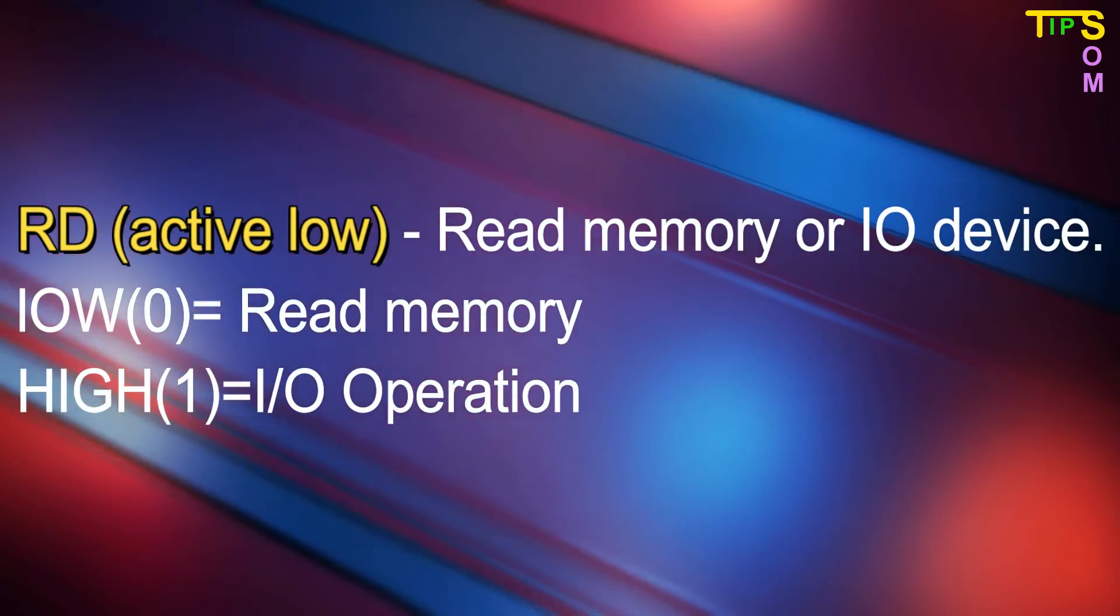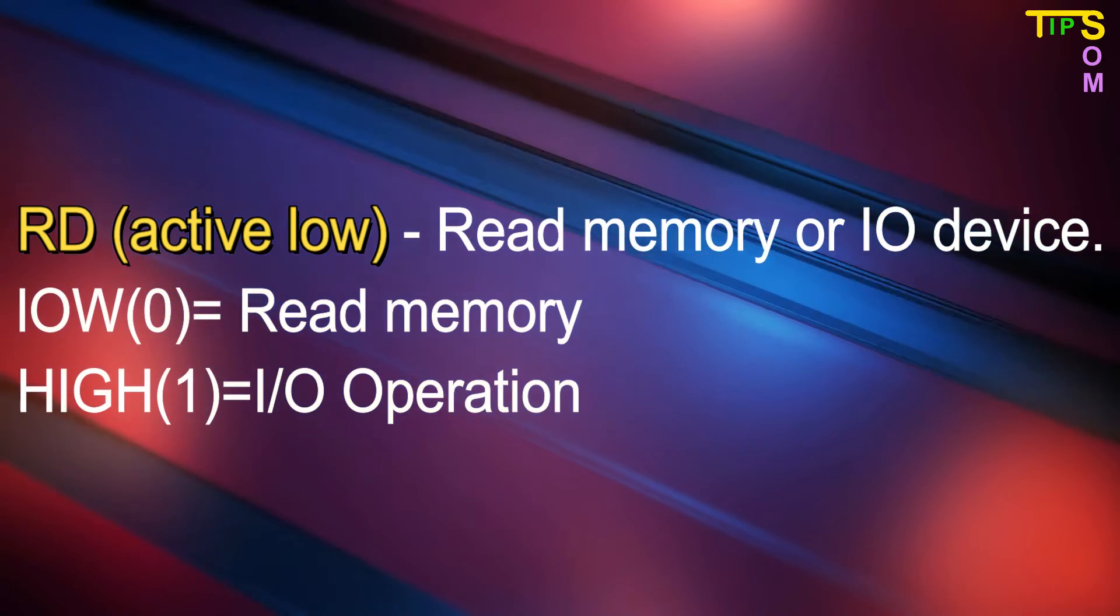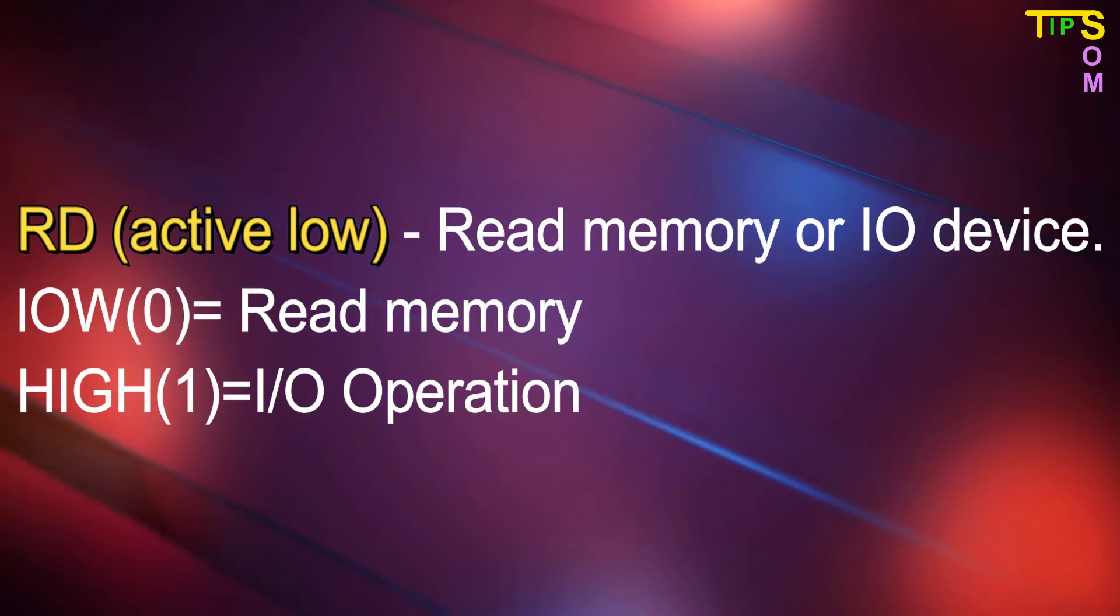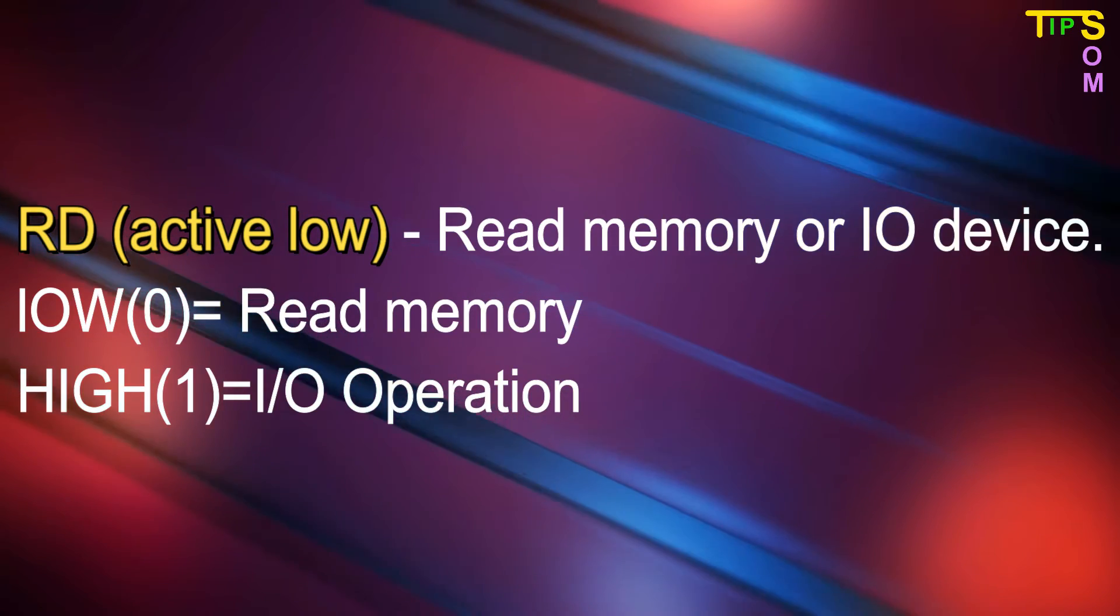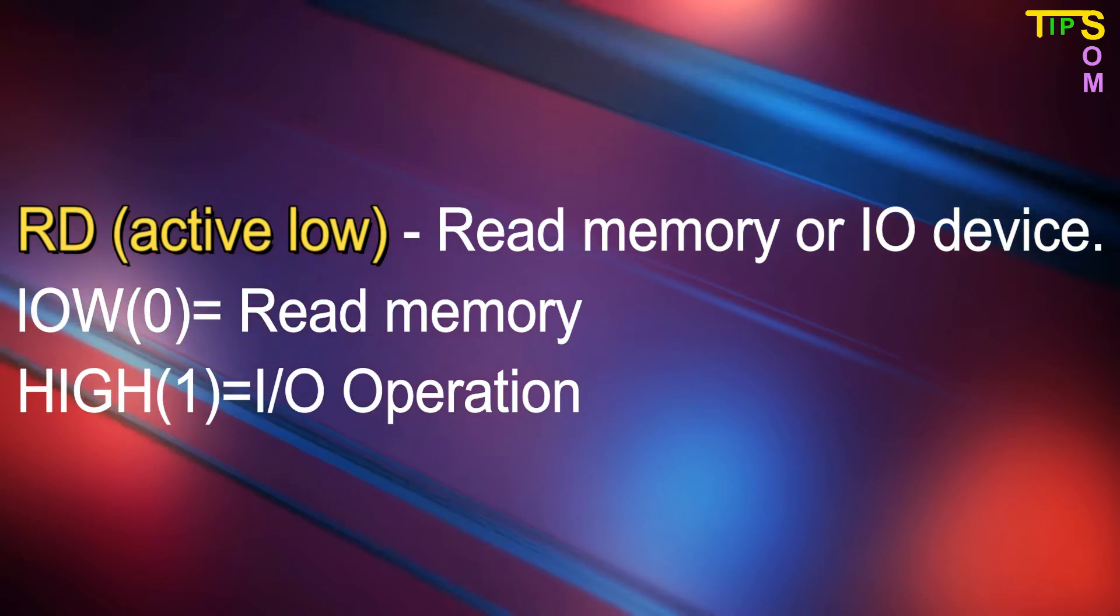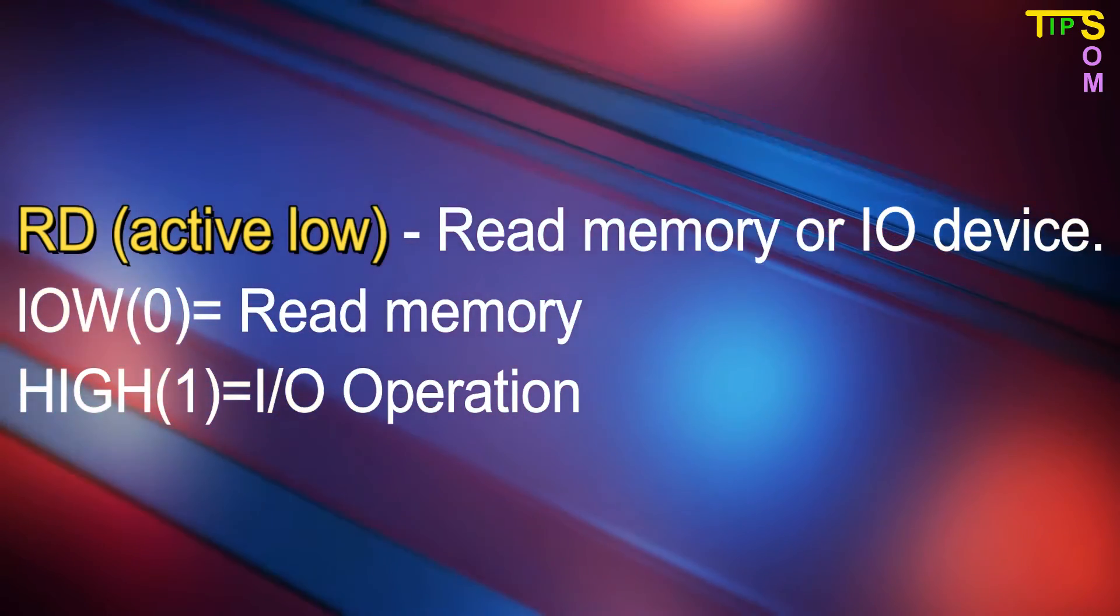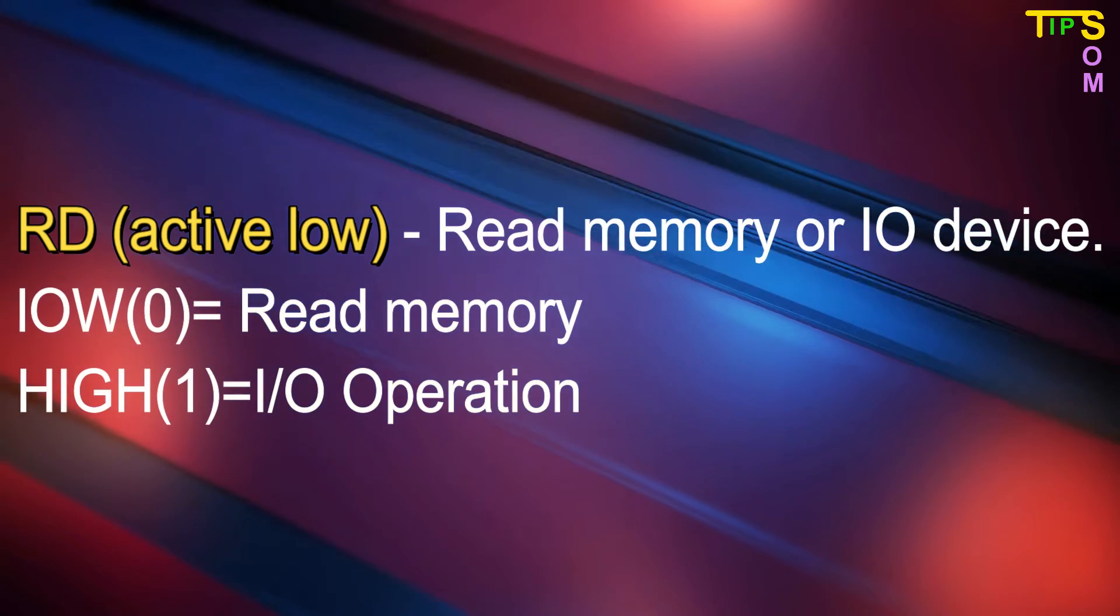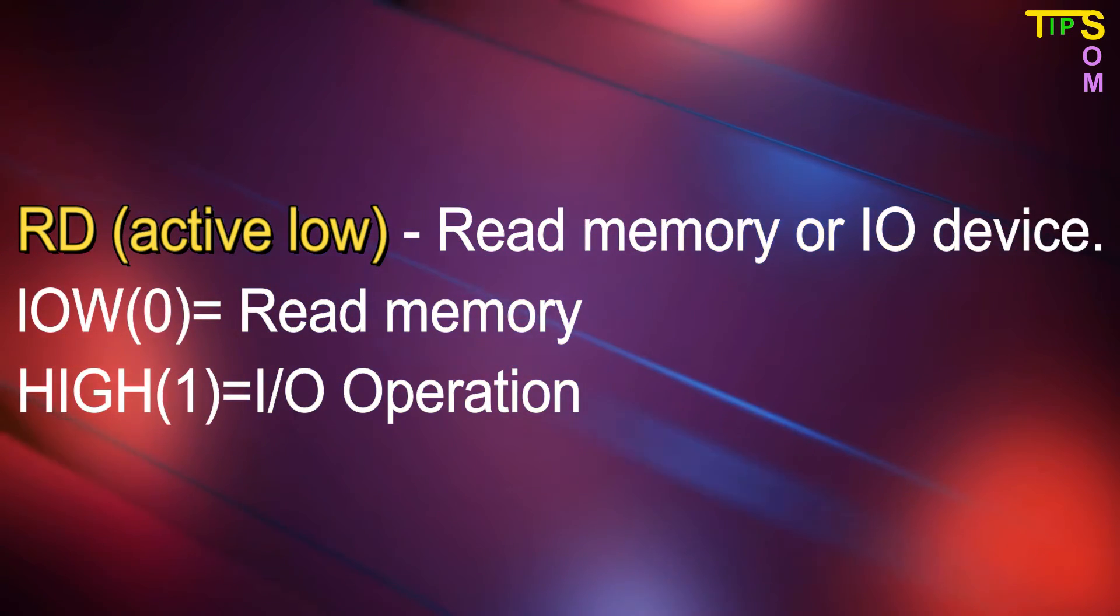Next one is the RD bar. This is the active low signal for read memory. It differentiates between the read memory or the input-output device. When it is 0, it defines the read memory operation is going on and when it is 1, it defines the input-output device operation is going on.